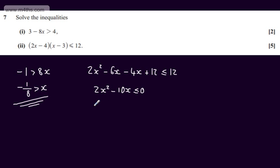I can factor this, taking out the common factor of 2x. We'll have 2x and then we'll have x minus 5, and that will be equal to or less than 0.